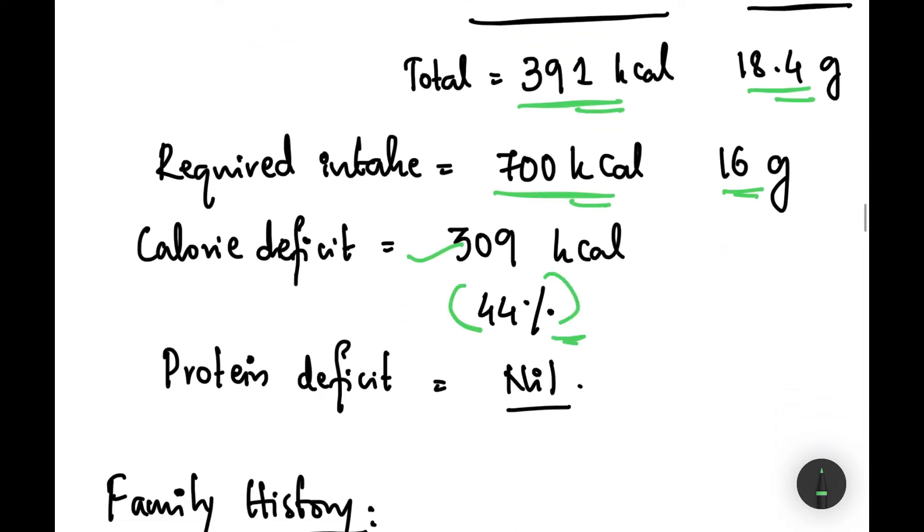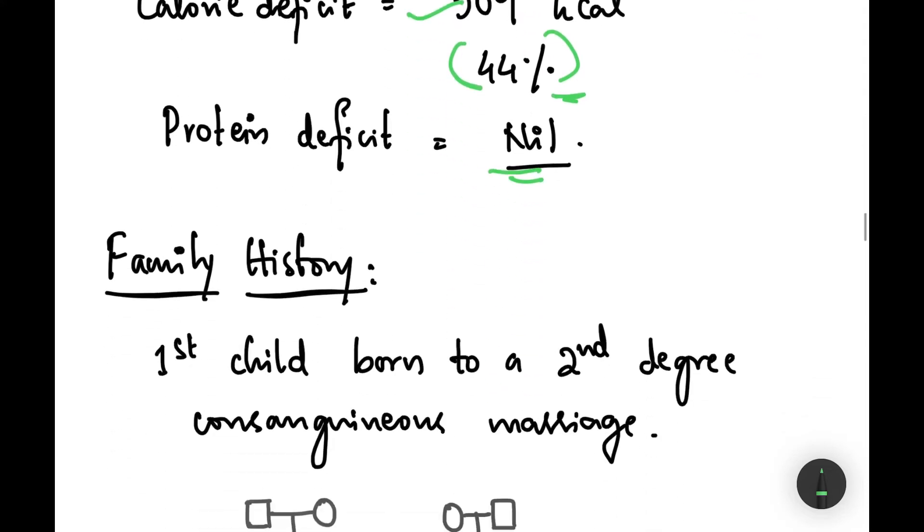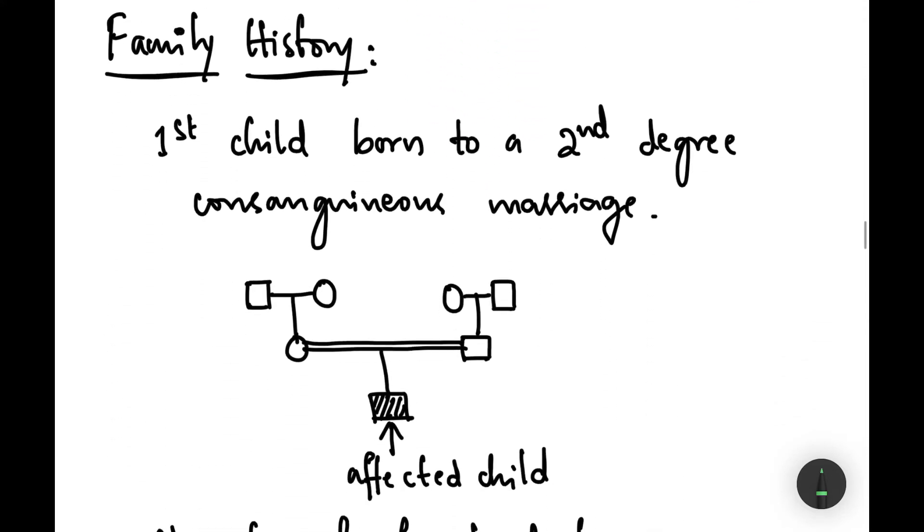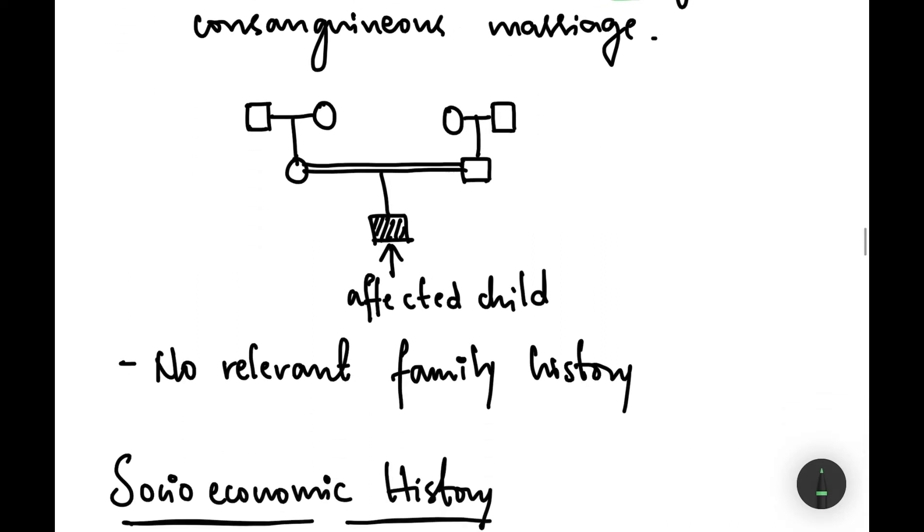Moving on to the family history, this is the first child born to a second degree consanguineous marriage and this is the pedigree chart. This is the affected child and there is no relevant family history or similar complaints in the family.